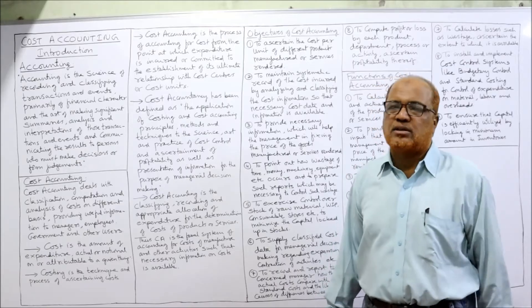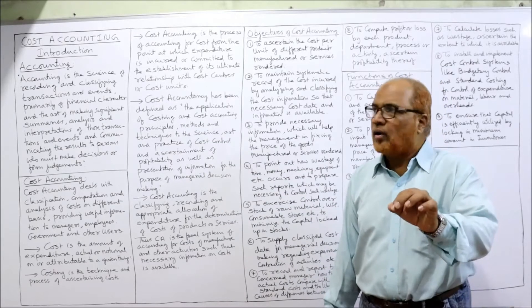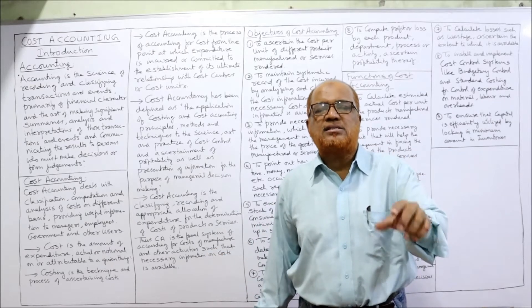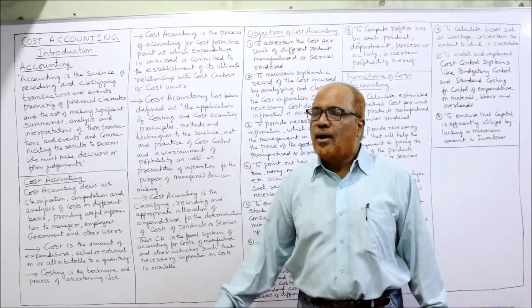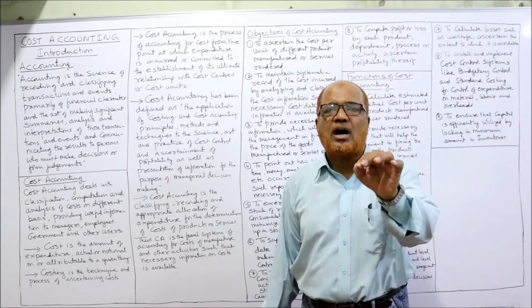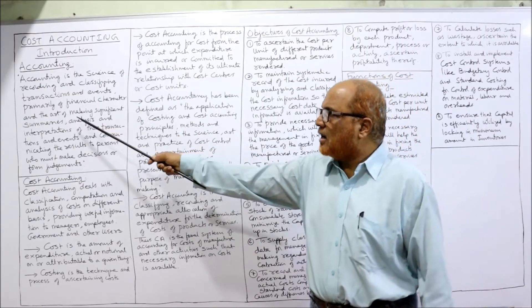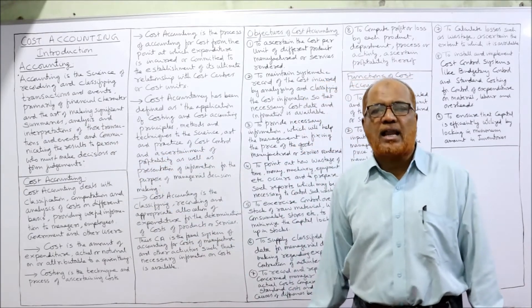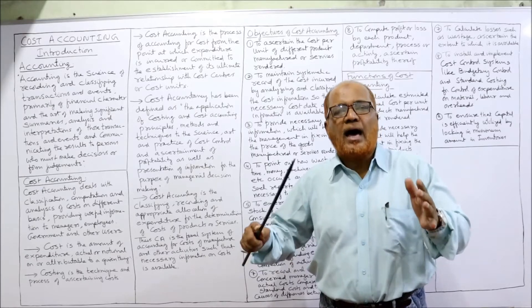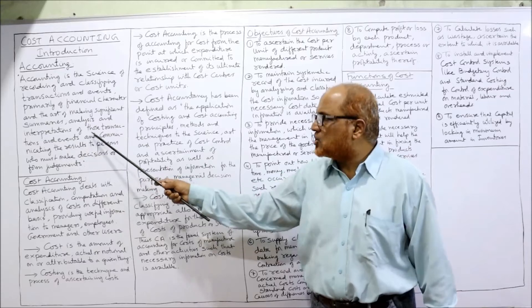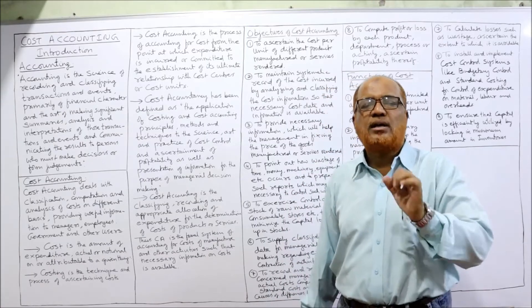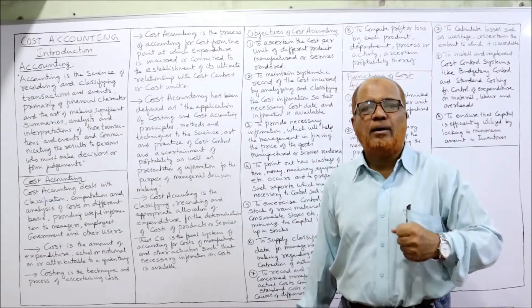Now I'll explain accounting in general. Accounting is the science of recording and classifying transactions and events happening in the business. These should be properly recorded and classified — primarily those of financial or monetary character. Accounting is also the art of making significant summaries, analysis, and interpretation of those transactions and events and communicating this information to the concerned parties so users can form judgments and take decisions.